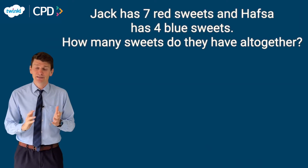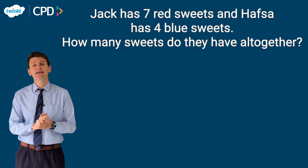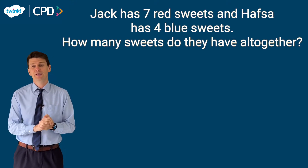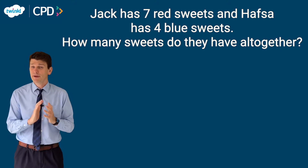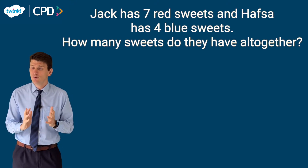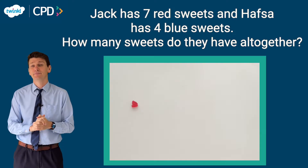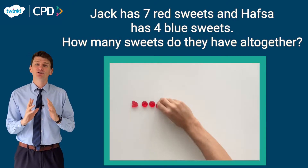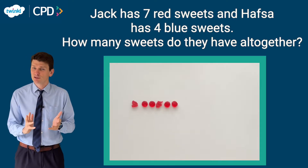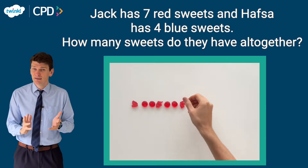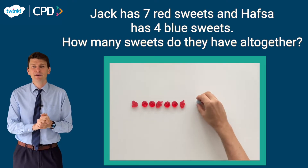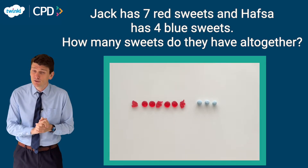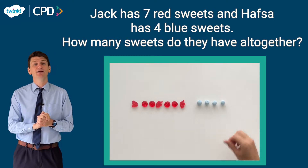Consider a problem such as this: Jack has seven red sweets and Hafsa has four blue sweets. How many sweets do they have altogether? A good place to start would be to allow children to investigate the problem using real sweets. They could then be asked to count the total number of each colour before counting the overall total to represent a sum.